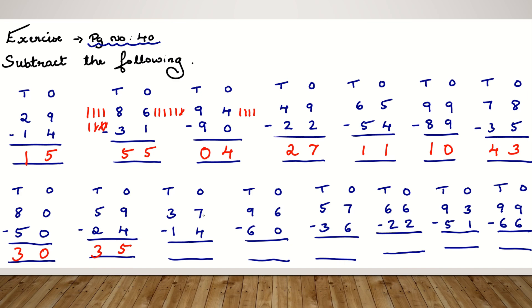37 minus 14. 7 minus 4 is 3. 3 minus 1 is 2. And dear students, we have the next 5 sums.